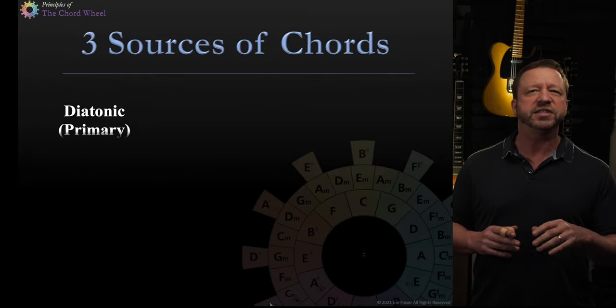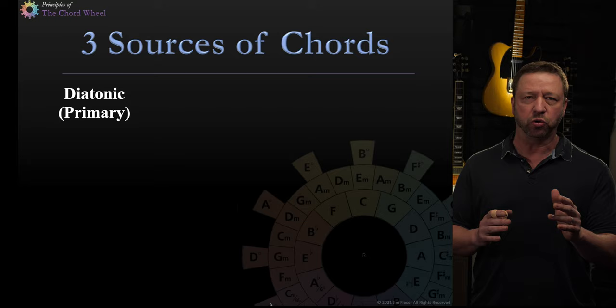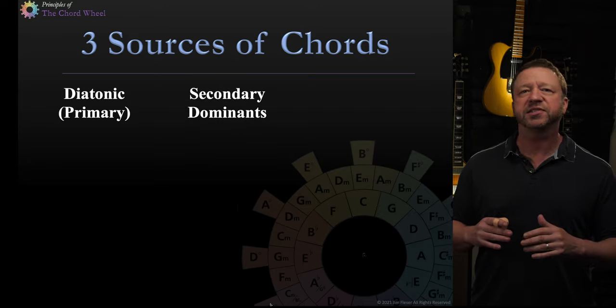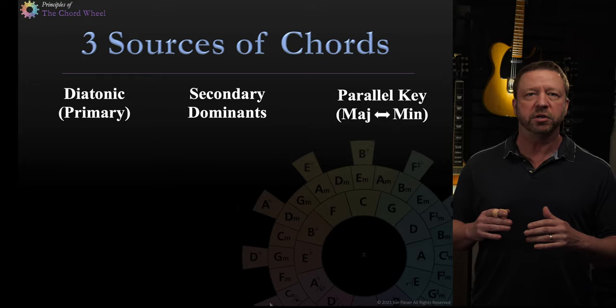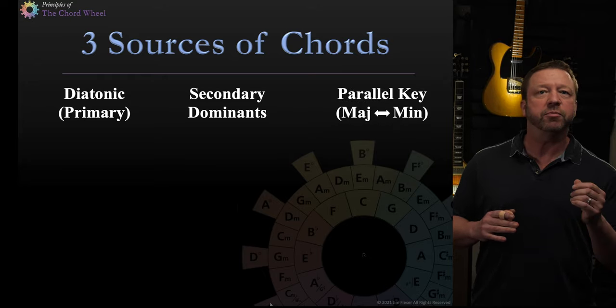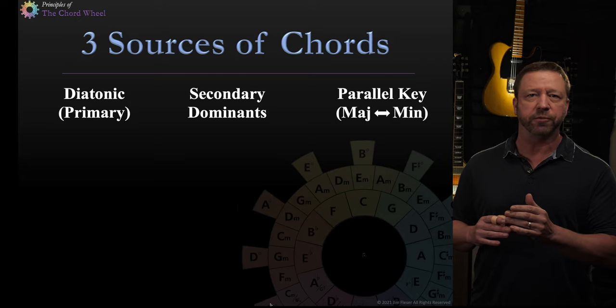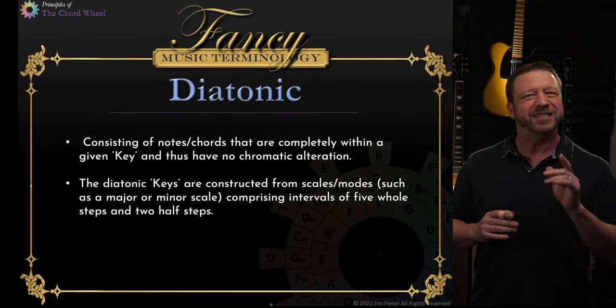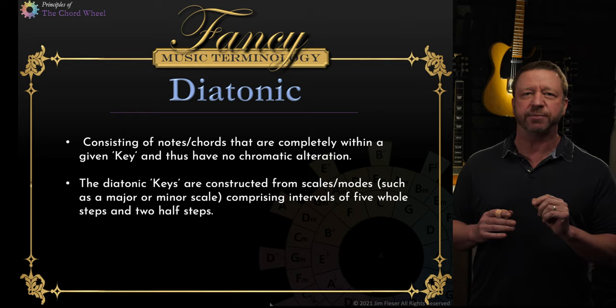The first source is the key itself, the diatonic chords, that Rick calls the primary chords. Second are the secondary dominants, and lastly we have the borrowed chords. In a key that is major, the borrowed chords would be from the parallel minor. Let's go back to the first category, diatonic. That's a fancy word. What does diatonic mean?